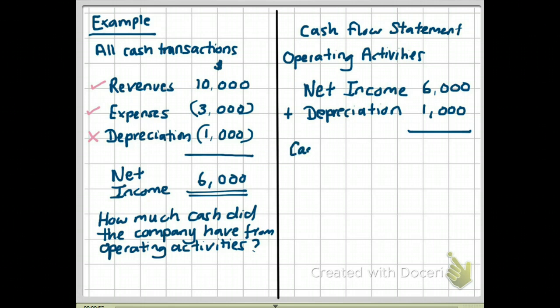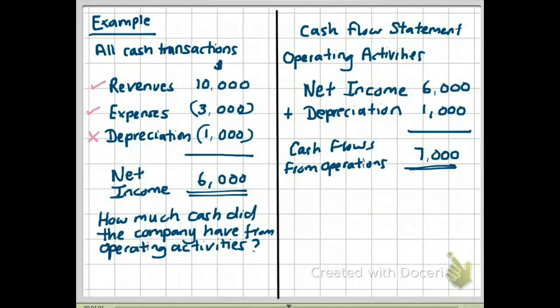That gives cash flow from operating activities equal to $7,000, which is exactly what we calculated earlier. So when preparing a cash flow statement using the indirect method, you start with net income, find depreciation on the income statement, and add it back under operating activities.